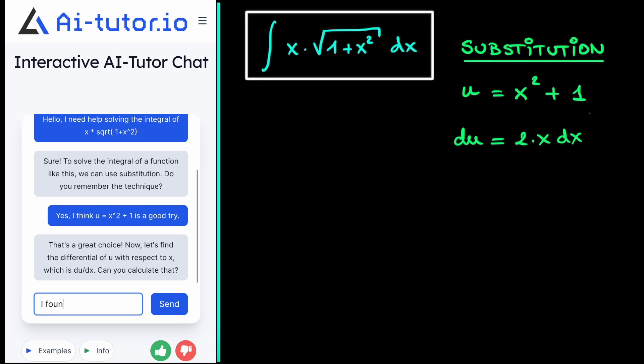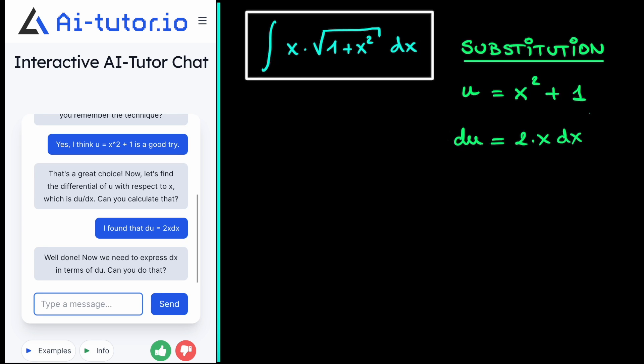Again, to check whether we are on the right track, we can just tell the AI tutor what we found. We found that du is equal to 2x dx. And it says that we are indeed correct, and that we now need to express dx in terms of du.